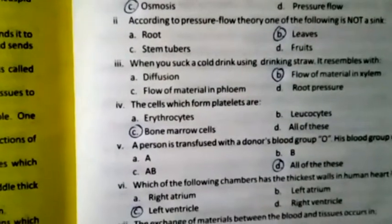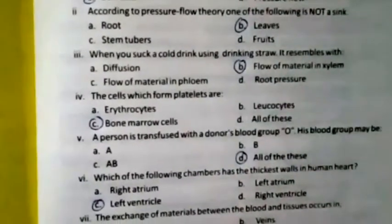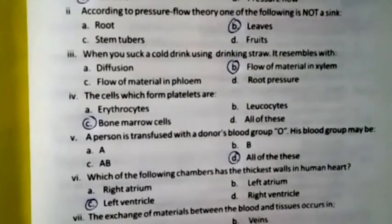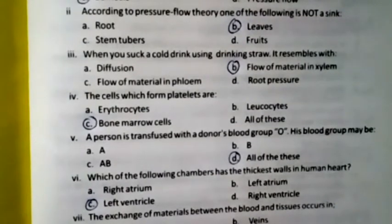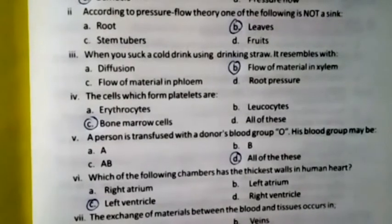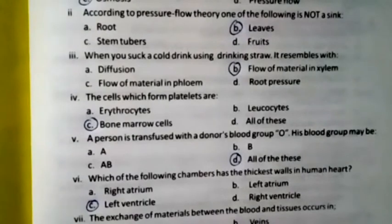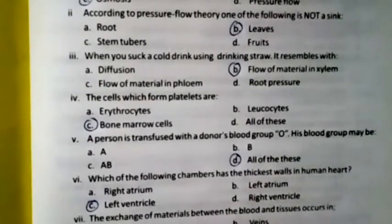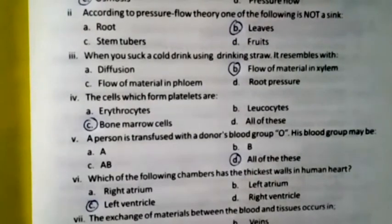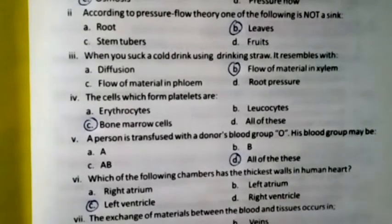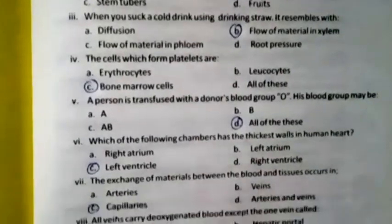The cells which form platelets are bone marrow cells. Question five: A person is transfused with donor blood group O; his blood group may be A, B, AB, or all of these. The right option is all of these. Question six: Which chamber has the thickest wall in the human heart? The right option is left ventricle. Exchange of material between blood and tissue occurs in capillaries.